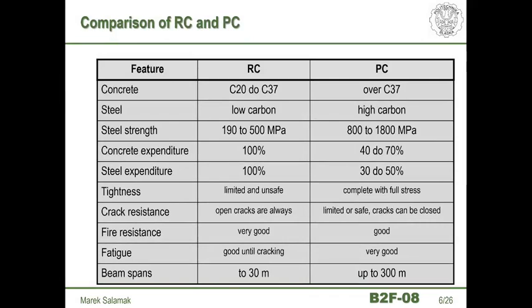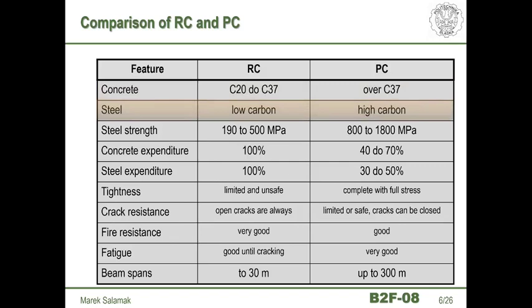Let's compare reinforced and pre-stressed concrete in more detail, starting with materials. With tensioning, we must use higher classes of concrete — we are introducing additional load, so we need a higher reserve in concrete strength, starting properly from class C37. We use a different type of steel for tensioning: high-carbon steel. Classic reinforcing steel is not suitable for tensioning because it has too much ductility.